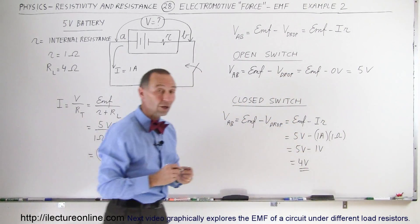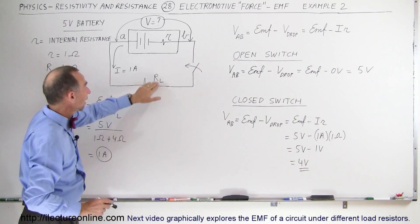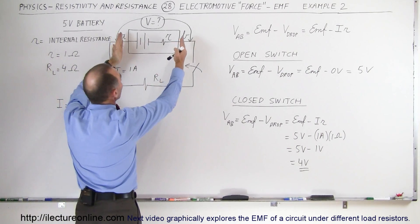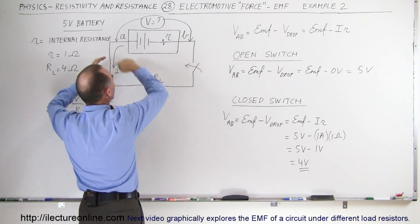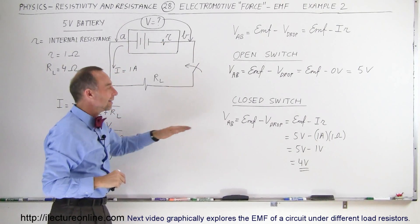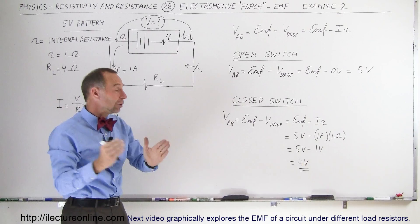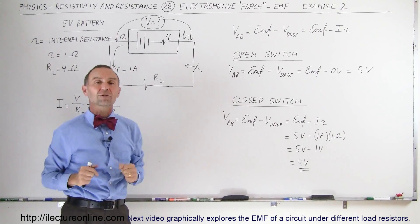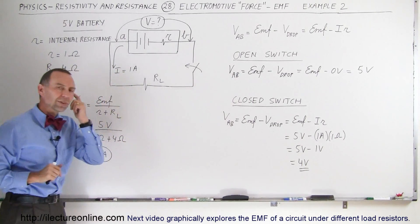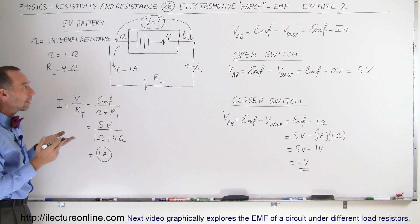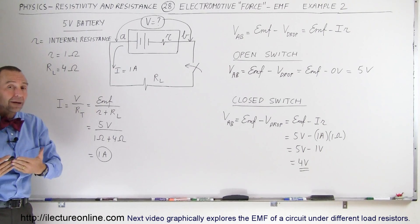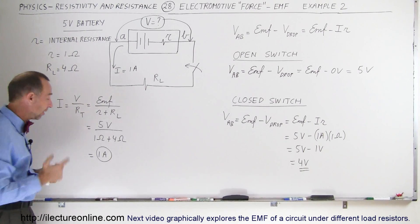So with a load resistor of 4 ohms and an internal resistor of 1 ohm, the potential difference from A to B across the battery, as current flows in the circuit, is only 4 volts — not the 5 volts of the battery. That's kind of interesting. Does that mean that with a load resistor of 4 ohms, the battery acts like a 4-volt battery? The answer is yes.